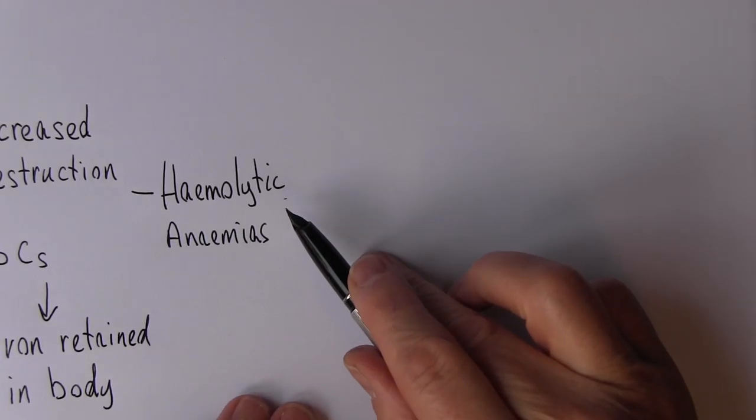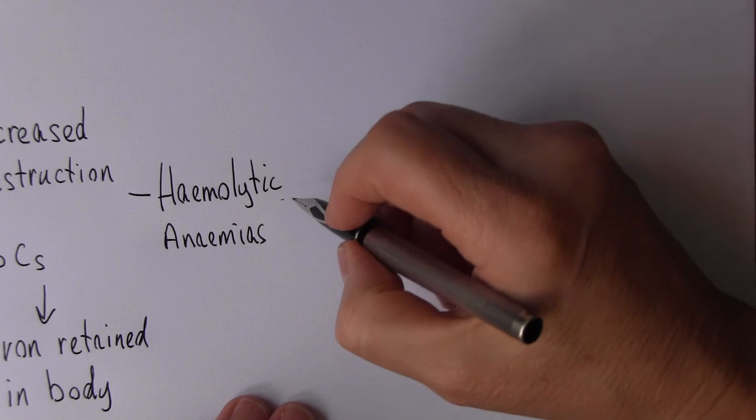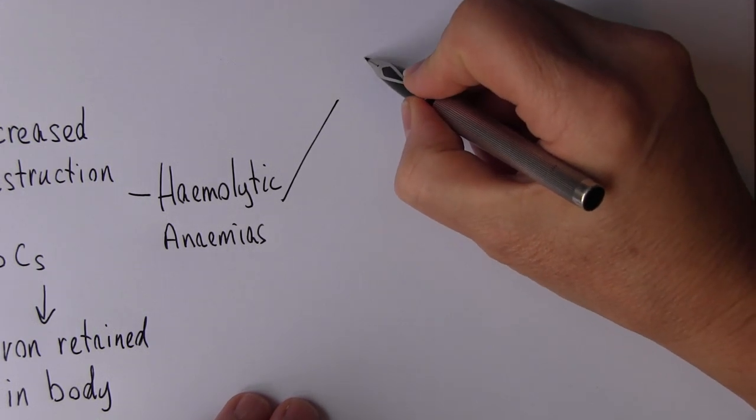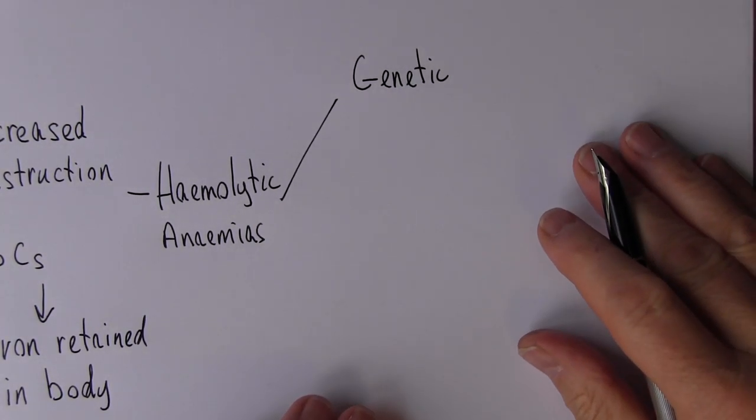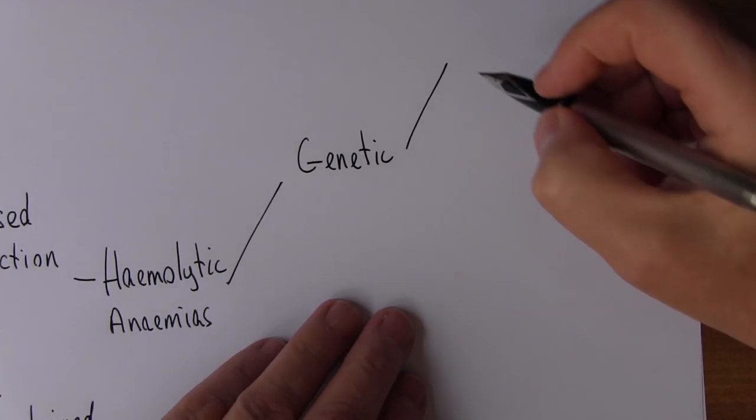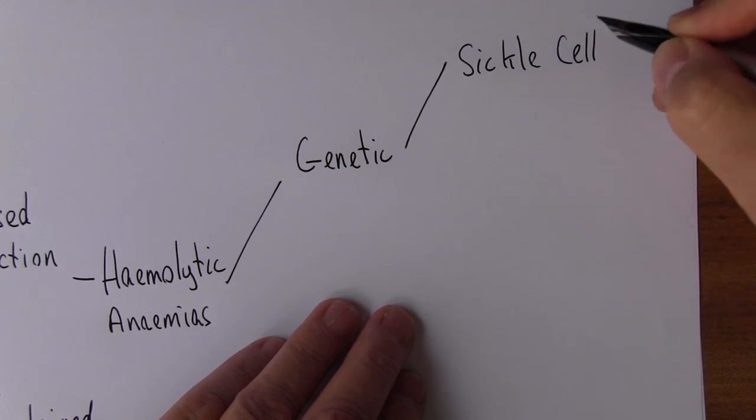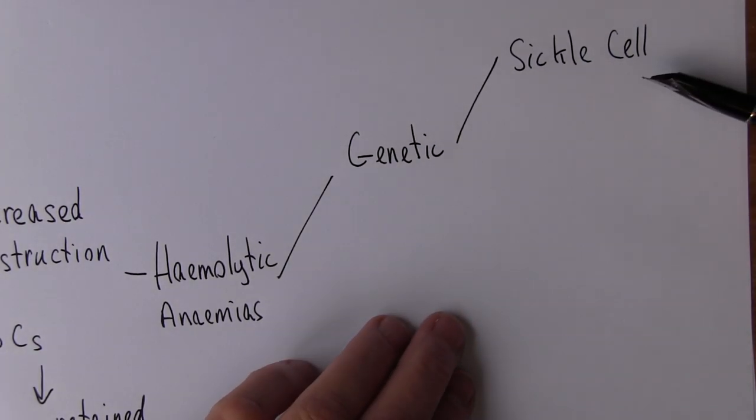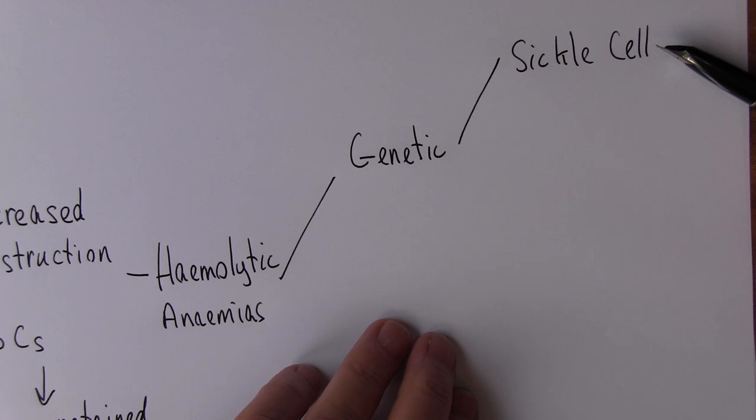So what can cause the hemolytic anemia? What can cause the excessive break up of the red blood cells? Well, this can be for genetic reasons. Several genetic conditions can predispose to this, and perhaps the best known of these is the sickle cell disease, resulting in sickle cell anemia. This is an autosomal recessive condition. Both parents need to carry the gene, and the cells change from being the normal biconcave discs to being sickle shaped.